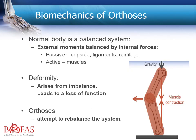Let us remind ourselves of some simple biomechanics. The normal body is a balanced system, kept in the correct position by a balance of internal forces with external moments. These are maintained by passive structures — capsules, ligaments and cartilage — and also by active forces developed by muscles. Therefore, if there is an imbalance in any of these structures, this will lead to a deformity and a loss of function. An orthotic attempts to rebalance this system.